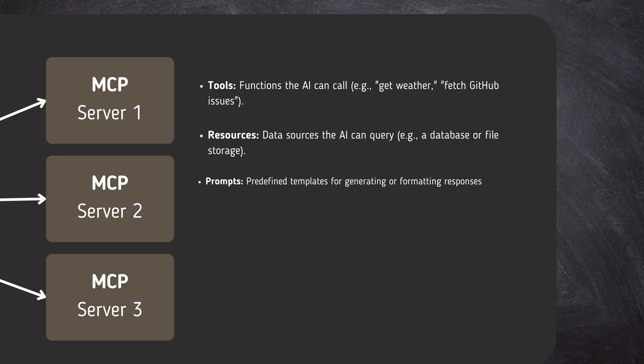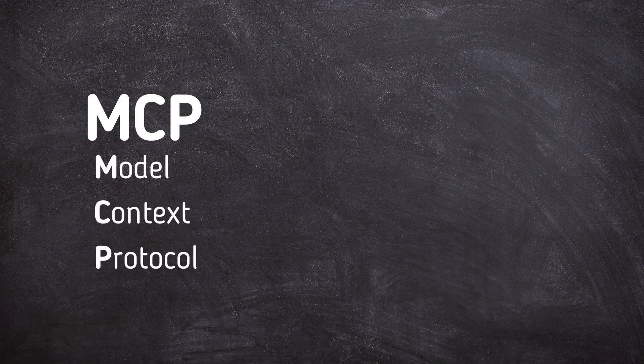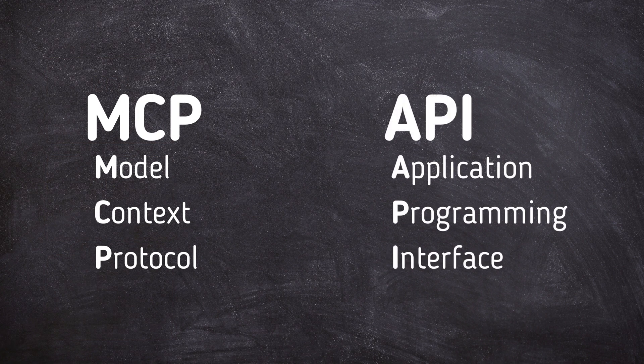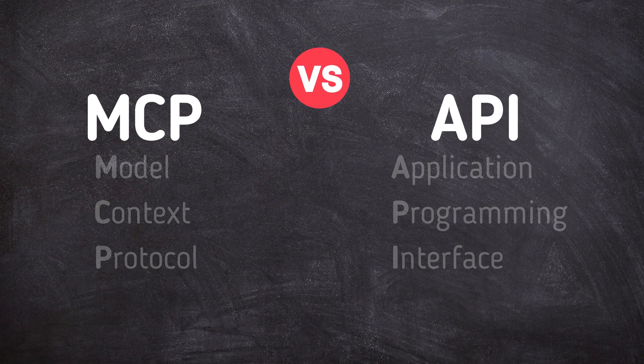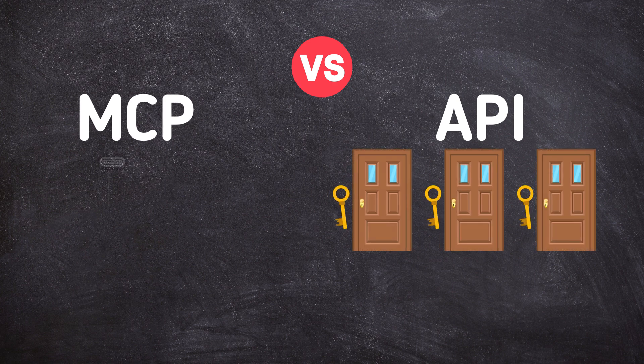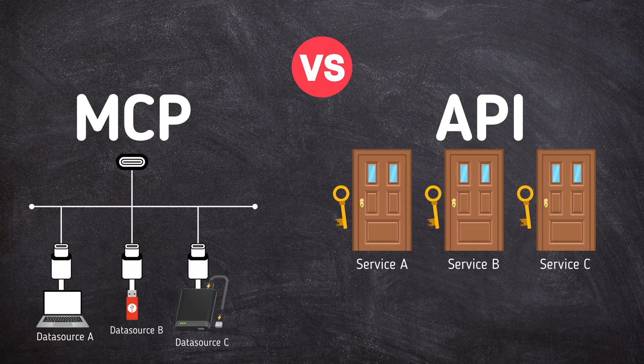In summary, the MCP server is the toolbox that provides access to external data and functions for the AI via a standardized interface. In comparison, APIs are like having a different key for every door — each service or tool needs its own unique integration, and you must keep track of how each one works. MCPs, on the other hand, are like a universal remote or USB-C port for AI: one connection lets AI interact with many tools and services in a consistent, flexible way, with real-time updates and built-in instructions.